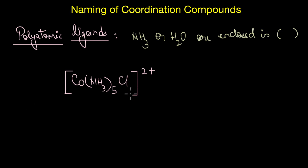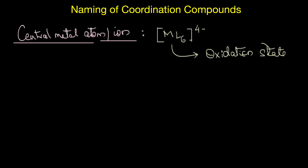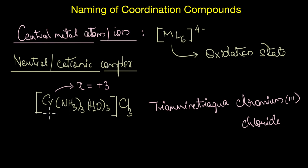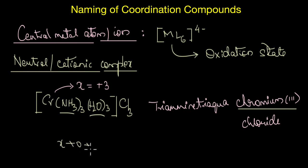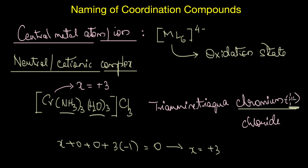After the ligands, we name the central metal atom, which must always be written along with its oxidation number. For a neutral or cationic complex like [Cr(NH₃)₃(H₂O)₃]Cl₃, the name would be 'triamine triaqua chromium(III)'. To find chromium's oxidation state: the neutral ligands contribute zero, there are three chloride ions, and the overall charge is zero, giving x = +3. So the central metal is always written with its oxidation state in Roman numerals.